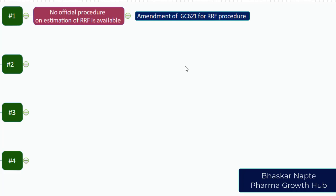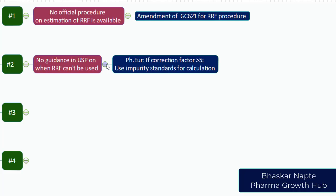Challenge number two: there is no guidance in USP on when RRF cannot be used. If you look at Pharma Europa, you will find that if the correction factor is greater than five, you cannot use the correction factor — you have to use the actual impurity standard for its estimation in a given sample. But such guidance is not available in USP, and this guidance is lacking there.